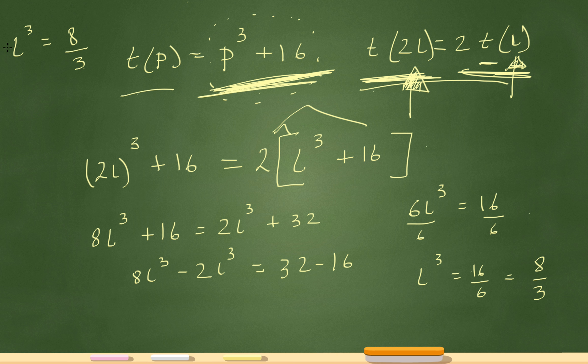If this is l cubed, I can take the cube root of this. So if I take the cube root of this and I take the cube root of the other side, it'll just leave me with l equals cube root of 8 over 3. So that's it. So l will equal cube root of 8 over 3.